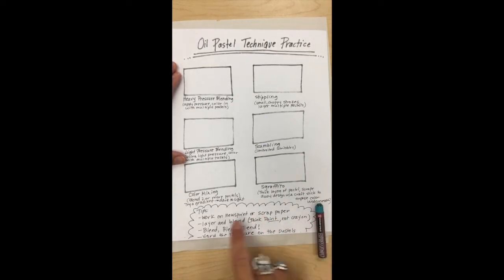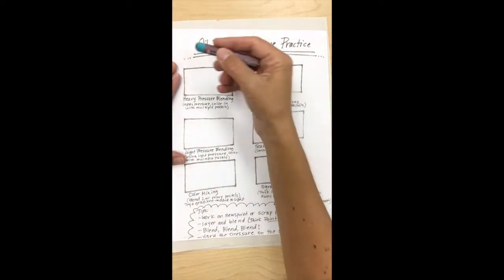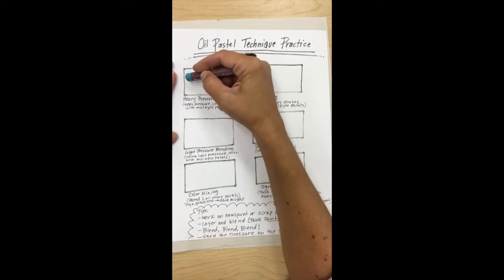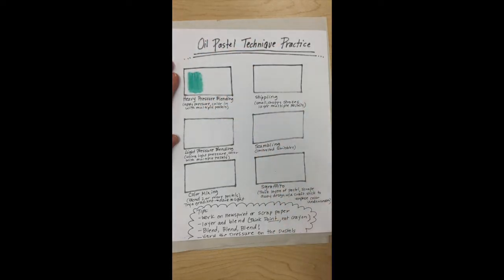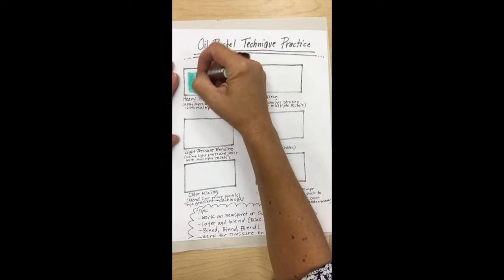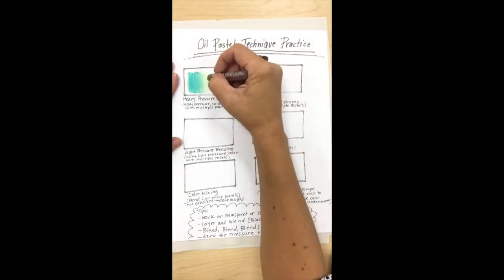So I've got some tips down here and each one of these is described. I'm going to start them right now. Heavy pressure blending is where you apply pressure and you color with multiple pastels. Just like the watercolor pencils, the pressure that you apply on the pastel matters. If you go really light you're gonna get a light value. If you go really dark you're gonna get awesome blending and mixing.